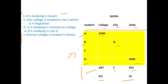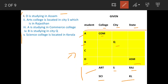Based on this information, we fill the remaining blanks. There are three states already identified. Since all students are in different states and D is in Assam, A's college cannot be in Assam. So A's college option is only Gujarat — commerce college is in Gujarat.